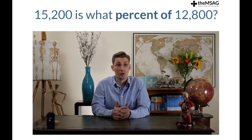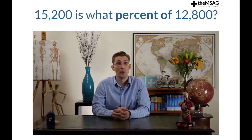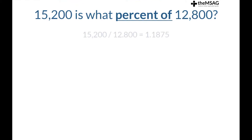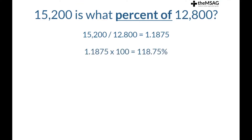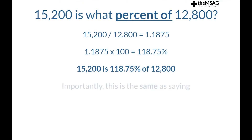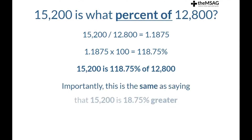It is worth spending a moment to point out another question type that some students get confused by: 'percent of' questions. If the question had been '15,200 is what percent of 12,800,' we would have a different result. We still divide the same way, getting 1.1875, but this time we simply multiply by 100 to get our answer of 118.75. So 15,200 is 118.75 percent of 12,800 — importantly, this is the same as saying that 15,200 is 18.75 percent greater than 12,800.